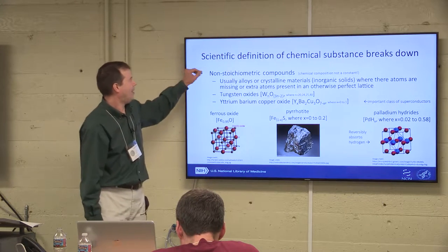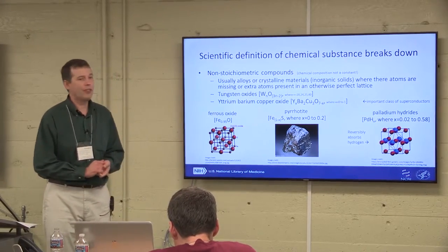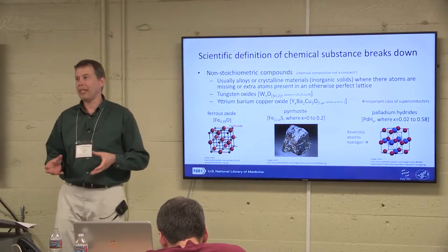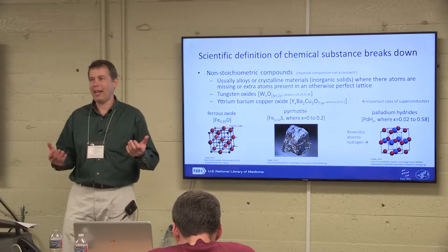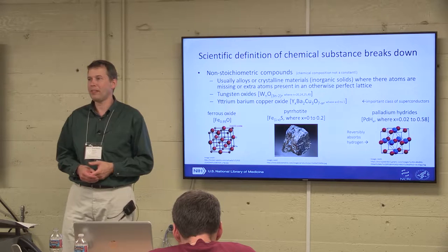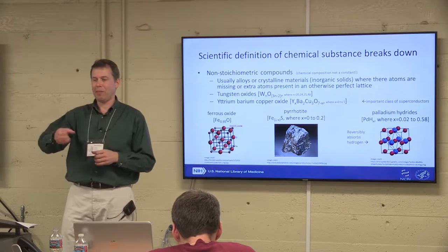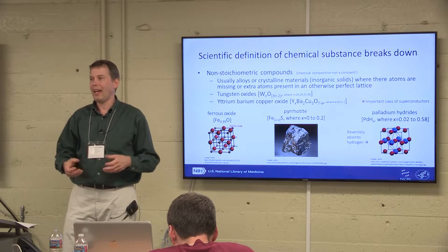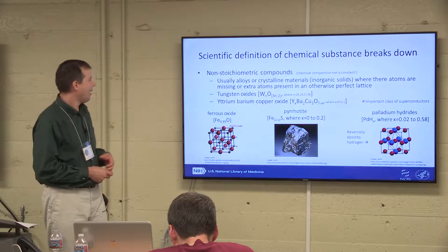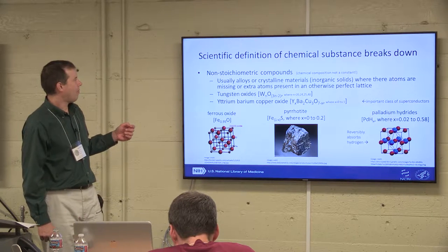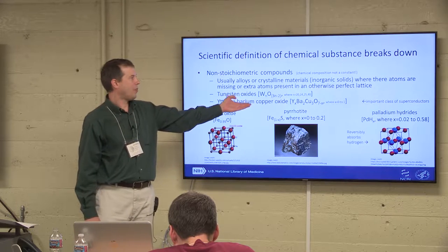But that definition kind of breaks down. There's the concept of non-stoichiometric compounds, where your matter isn't really a constant. Typically these are metals and various types of crystalline structures where you have a perfect lattice, but every once in a while there's an atom missing or an extra one present. You start to break down, and these cases are fairly well known.